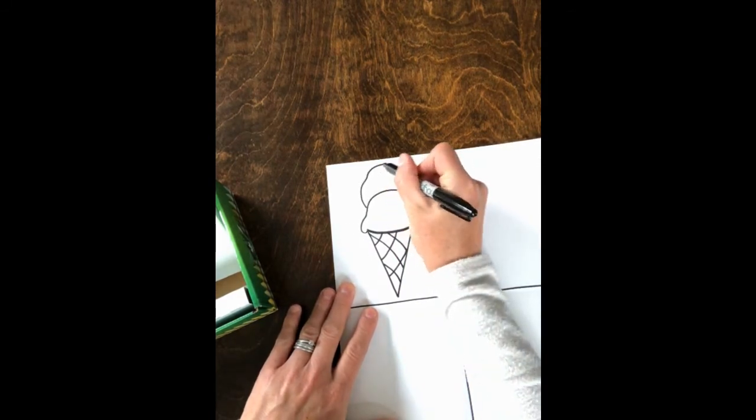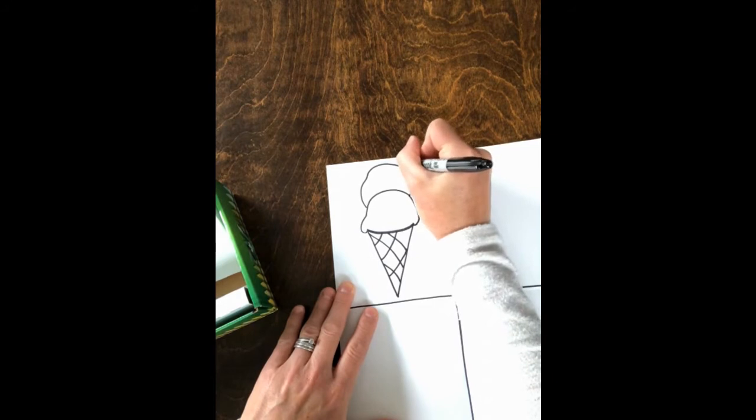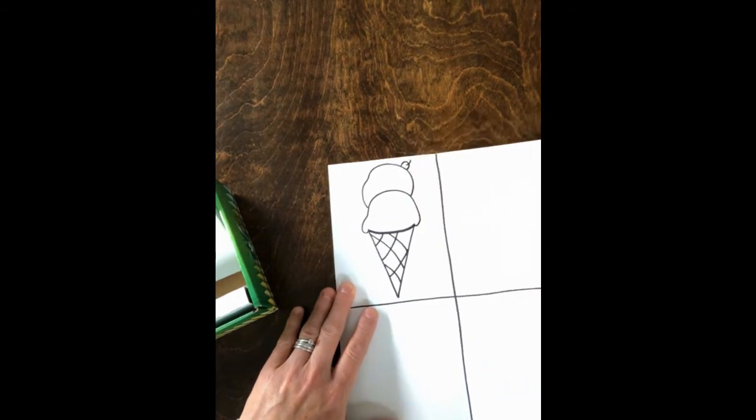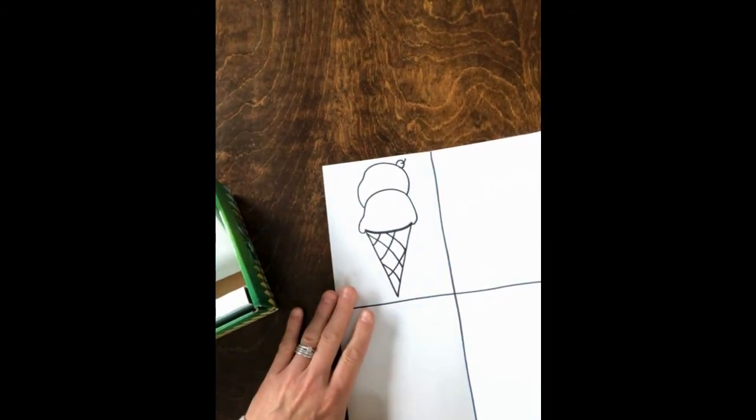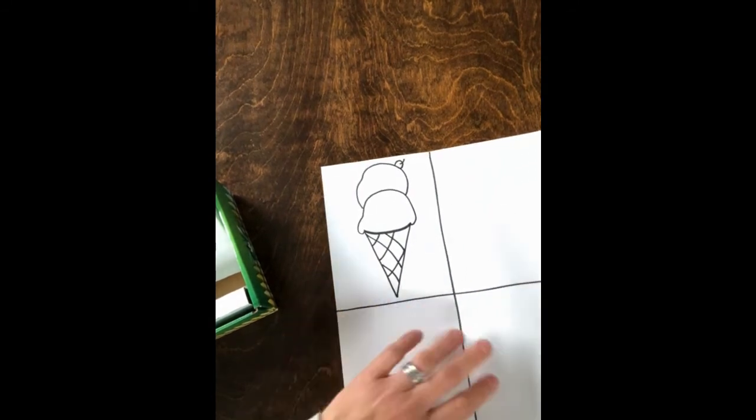So there's my first cone and then I'm going to create one scoop and two scoops, and if you want you could always add a little cherry. I think those little details are very fun, so I'm going to actually repeat that three other times.